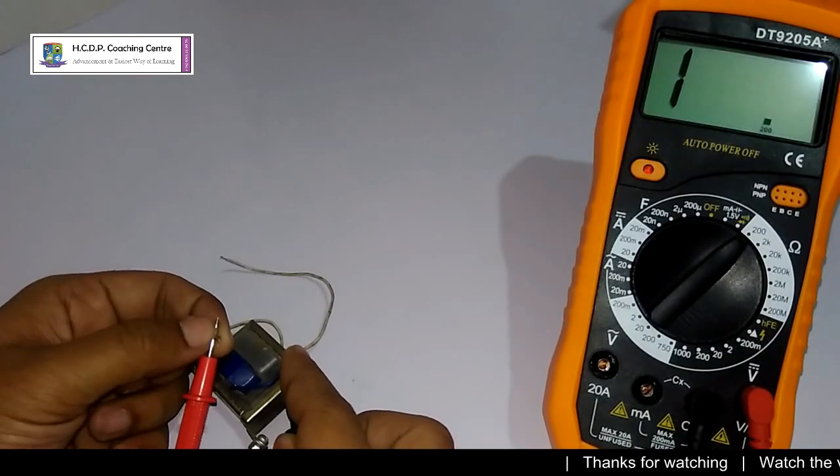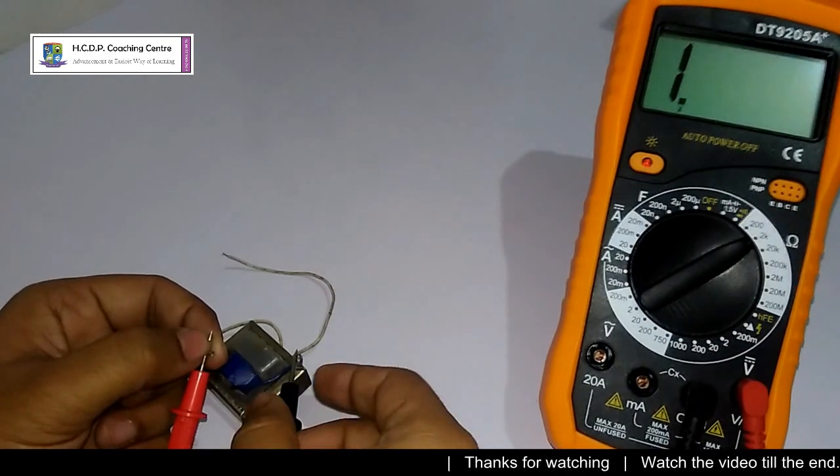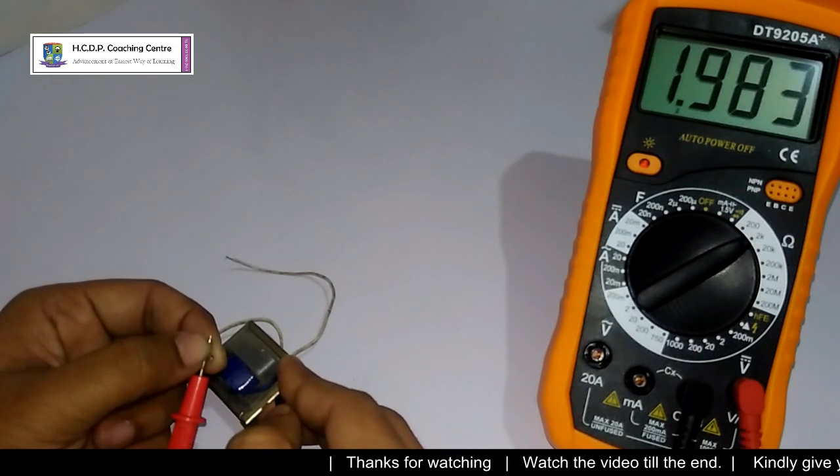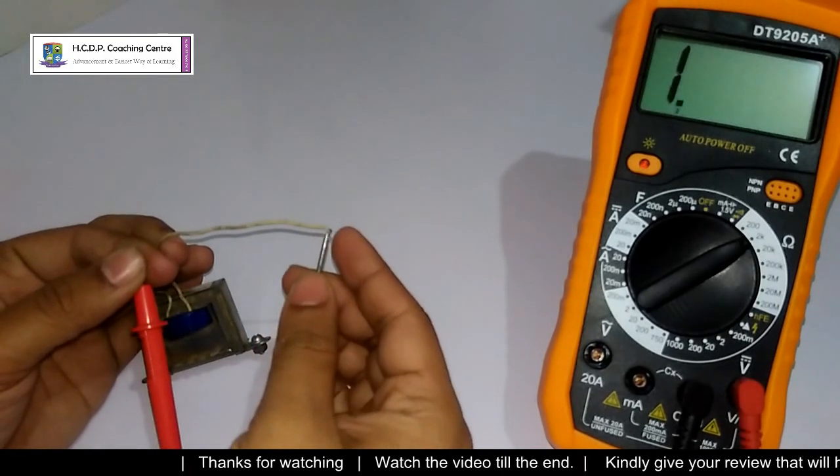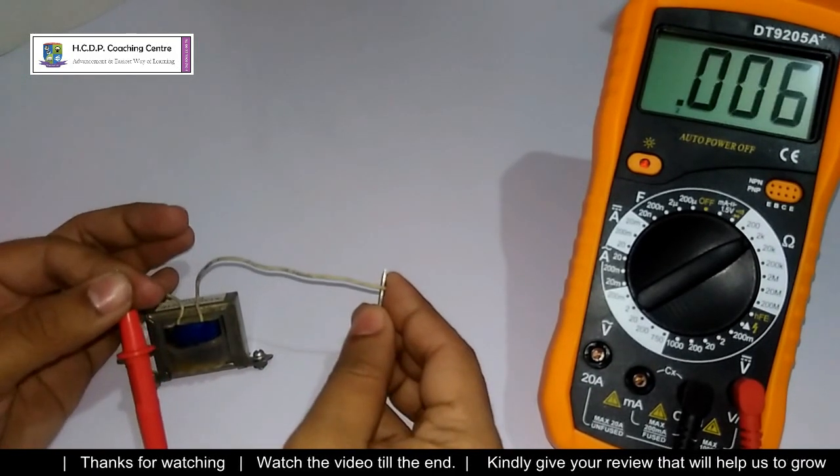I set my multimeter to measure the resistance mode. First I measured the resistance of primary windings and it shows about 1.98 kilo ohms. Now I measure the resistance of the secondary windings and it shows 0.03 kilo ohms, that means 30 ohms.